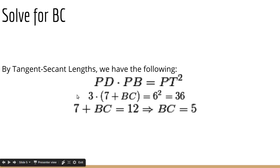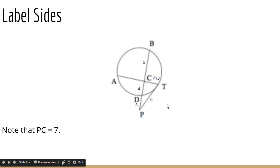6 squared is 36. Divide both sides by 3, and we get 7 plus BC equals 12. That gives us BC is 5. So we get this diagram, I've just labeled 5 on BC.